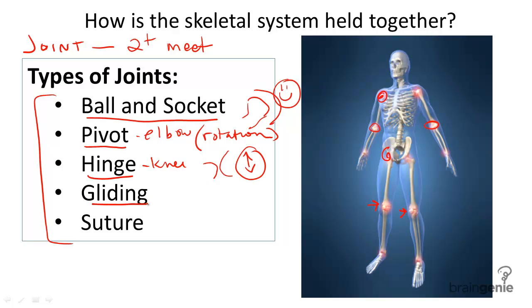A gliding joint, such as the wrist, ankles, and vertebrae, allows side to side and back and forth movement, such as your spine. But it's limited.